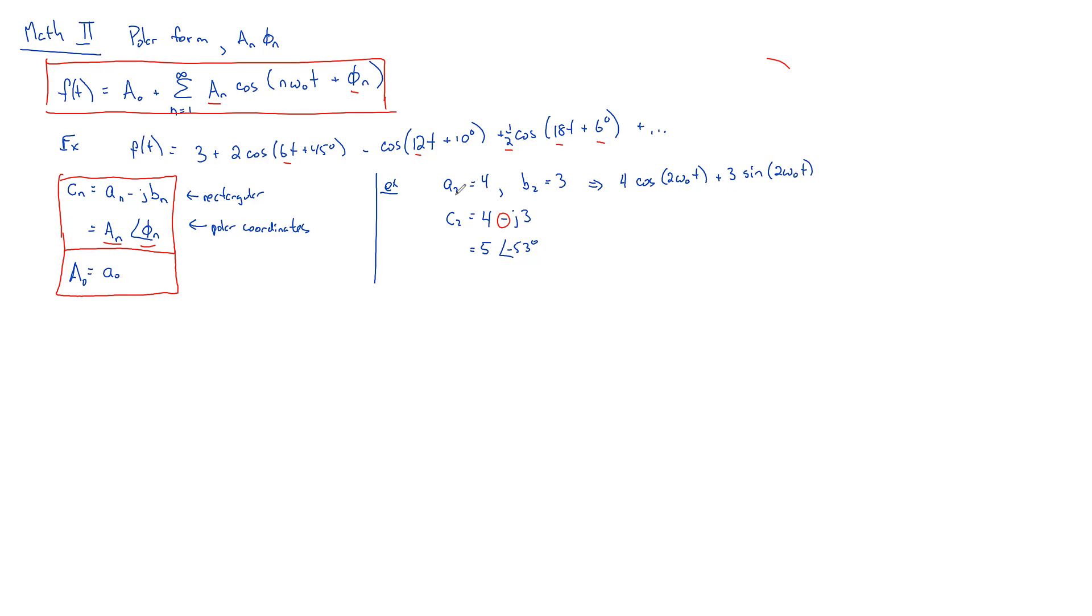Why is it the 2? Because we said it's the second harmonic over here. That means we could just as well draw that more intuitively as saying that the second harmonic looks like 5 cosine of 2 omega naught T minus 53 degrees.